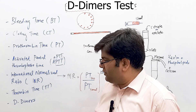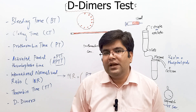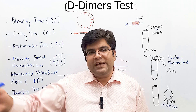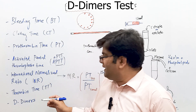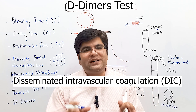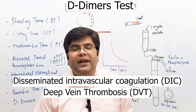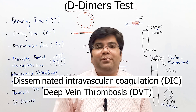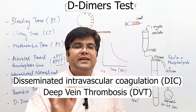The next clotting test involves D-dimers. D-dimers are fibrin degradation products released during fibrinolysis. When a blood clot forms, fibrin fibers become cross-linked; after some days, plasmin breaks these down into D-dimers. In all conditions where clotting has occurred — such as DIC (disseminated intravascular coagulation) with widespread small clot formation in serious bacterial infections, DVT (deep vein thrombosis) in leg veins, or pulmonary embolism — D-dimer levels will be elevated in the blood.